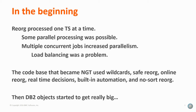Going back to the beginning of Reorg in the 80s, Reorg processed one table space at a time. There was some parallelism possible but not a lot, so if you wanted parallelism you'd run multiple jobs at a time. Load balancing was always a problem — if one table space was bigger than the rest combined, which is common, you'd end up with one job running while others finished quickly. The software that is the base of NGT is code where nearly every innovation in DB2 utilities came from.